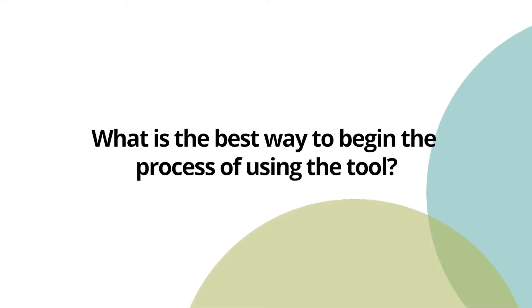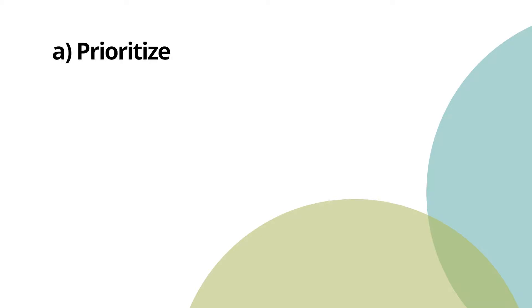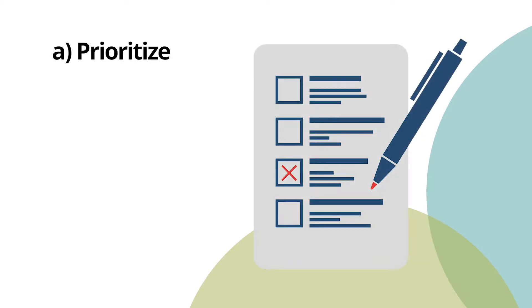What is the best way to begin the process of using the tool? There are different ways to approach the indicators depending on your unique needs. Here are a few ideas. A: Prioritize — have stakeholders do a dot-mocracy activity to vote on the indicators that need most urgent attention. See the facilitator's guide for details.